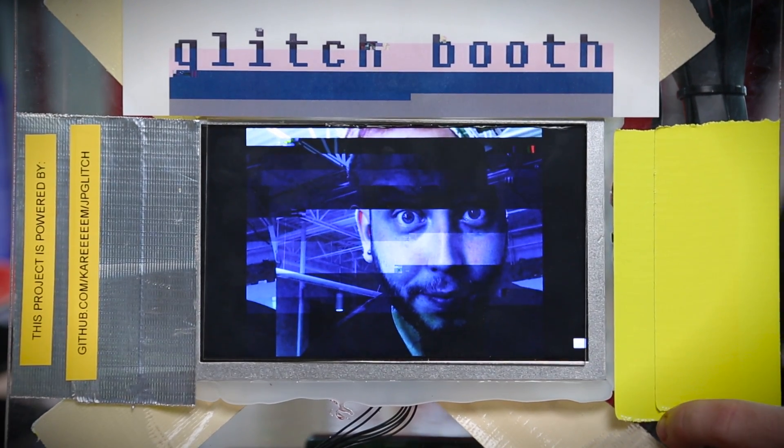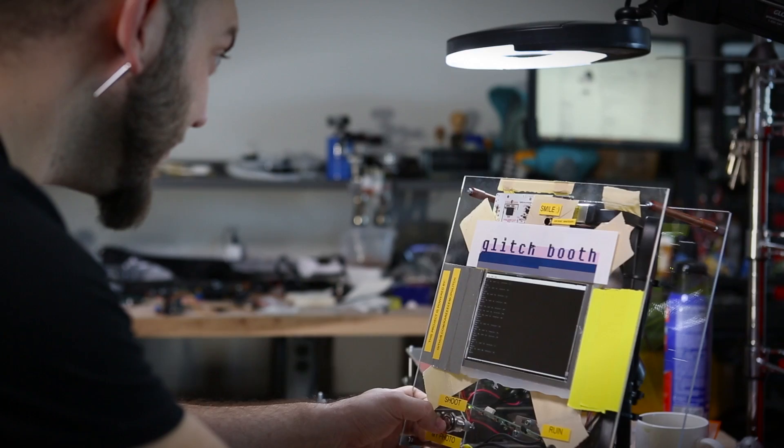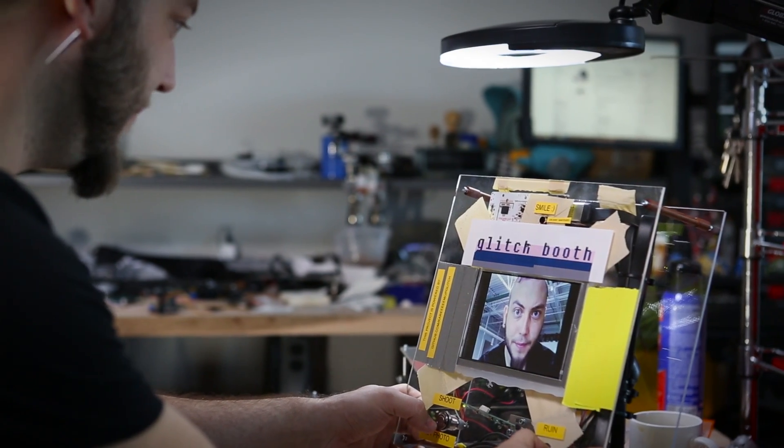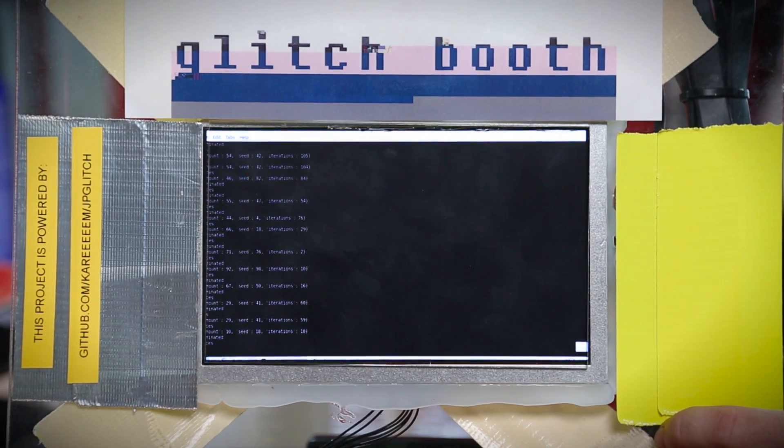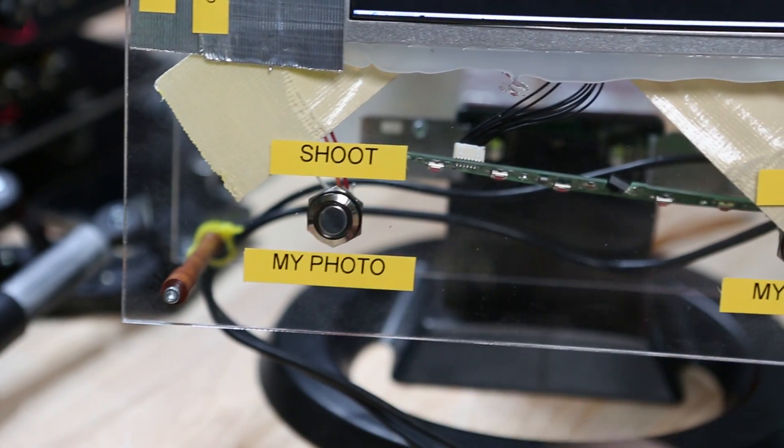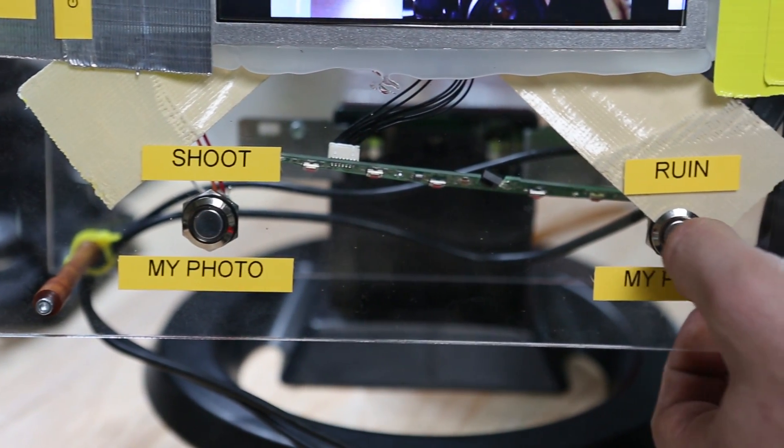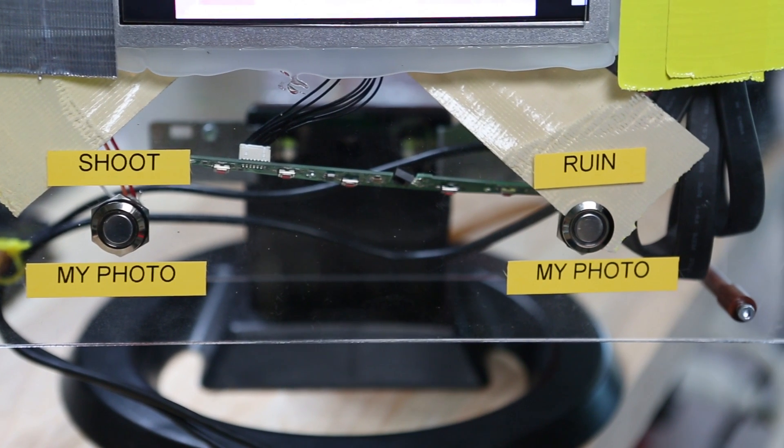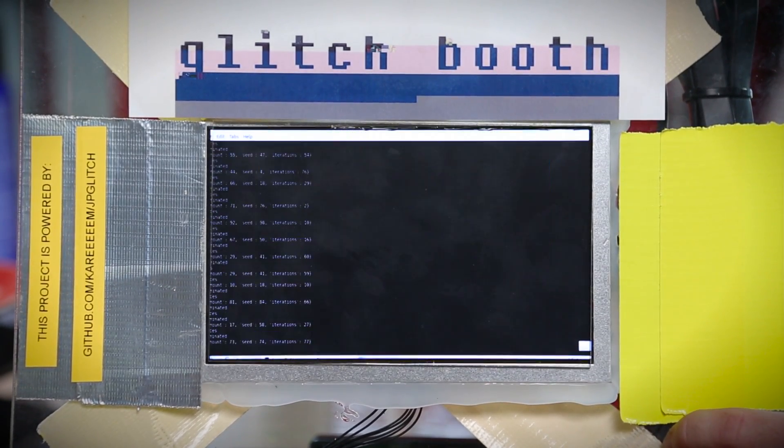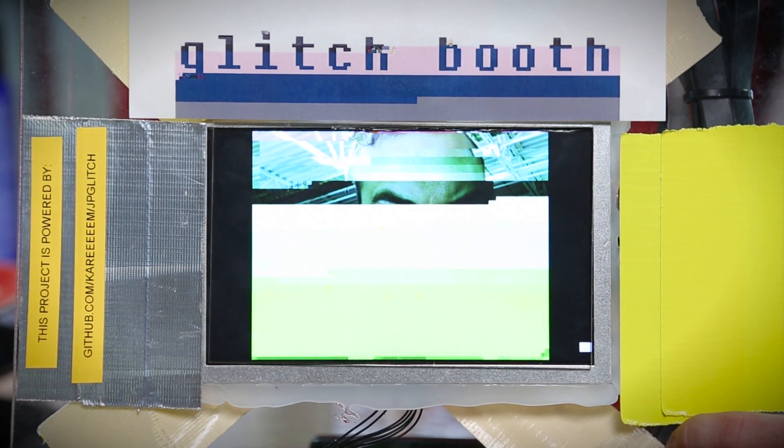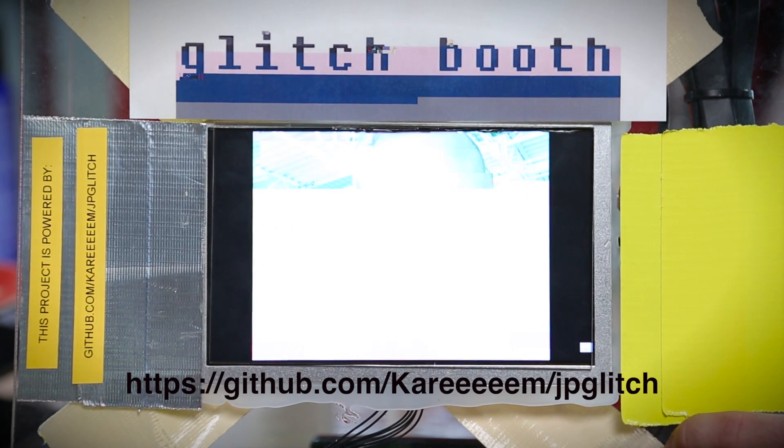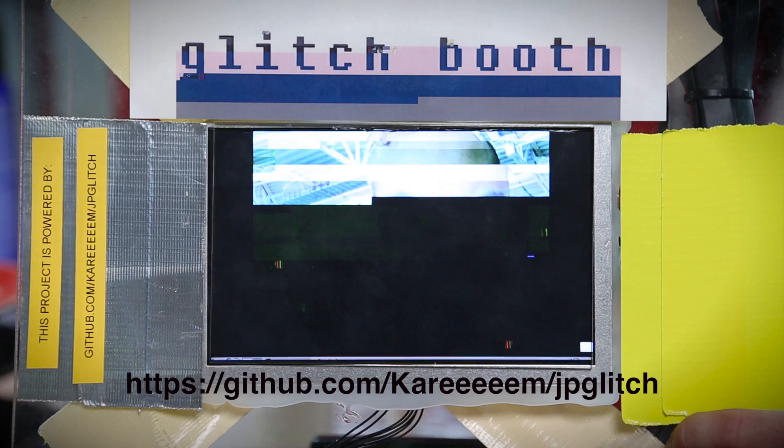I've used it to build this project which I'm calling the glitch booth. It's a photo booth which takes your picture and then corrupts the JPEG using random data that it just injects into the file. You can press one button and it'll take a photo. You can push this button and it ruins the photo using a glitching program that I pulled from Github. You can find this at Github slash Kareem with five Es slash JP glitch.